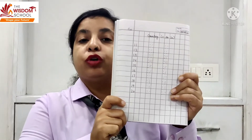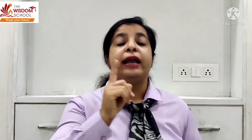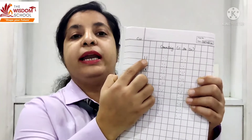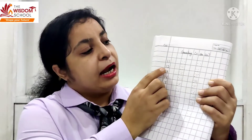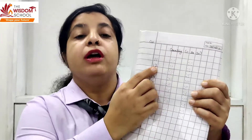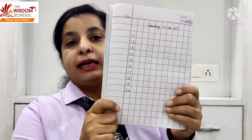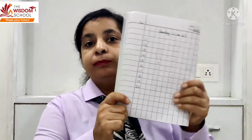ठीक है बच्चा, तो 1 1 eleven — 1 को 2 times लिखना है, जैसे यहाँ लिखा हुआ देखो। फिर 1 2 twelve — पहले 1 लिखना है, फिर 2। फिर 1 3 — पहले 1, then 3। 1 4 — पहले 1, फिर 4। इस तरह हमें 11 to 20 तक counting करनी है।